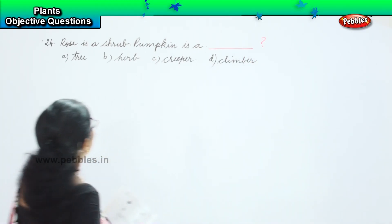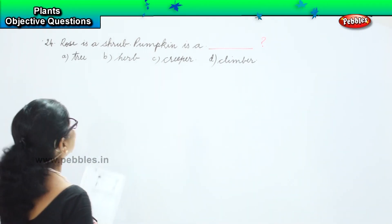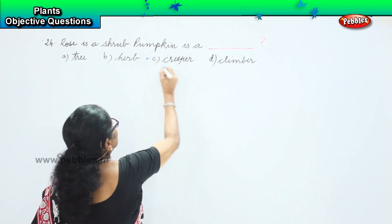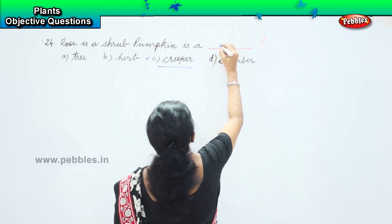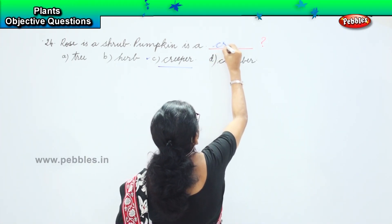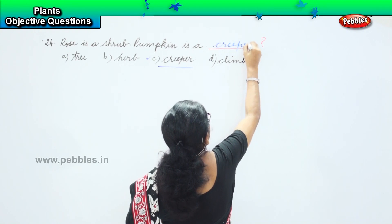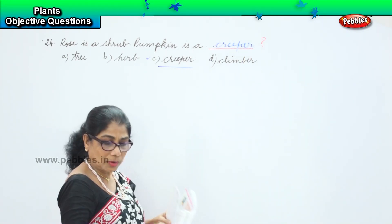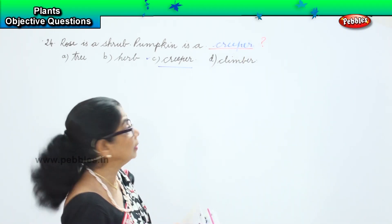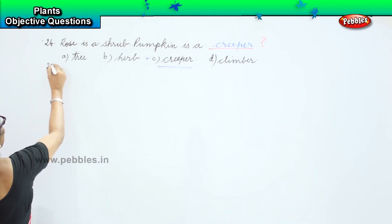If rose is a shrub, pumpkin is a creeper. It runs on the ground — pumpkin is a creeper, it creeps on the ground, it runs on the ground. That's the 24th question.